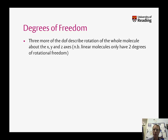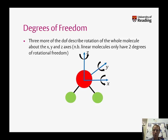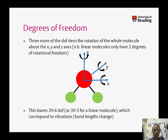Three more of these degrees of freedom describe rotation of the whole molecule about the x, y and z axes. So that gives a further 3 degrees of freedom that we're not interested in, because they're not related to vibrations. And these are the three rotations we can do. This leaves us with 3n minus 6 degrees of freedom, which correspond to vibrations — these are motions in which bond lengths of the molecule change.